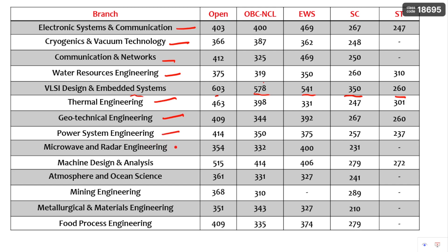Also available are Thermal Engineering, Geotechnical Engineering, Power System Engineering, Microwave and Radar Engineering, Machine Design and Analysis, Atmosphere and Ocean Science, Mining Engineering, Metallurgical and Materials Engineering, and Fuel and Combustion Engineering. These are all the various cutoffs for different branches. If you have any doubts, comment in the comment section and I will try to address them.